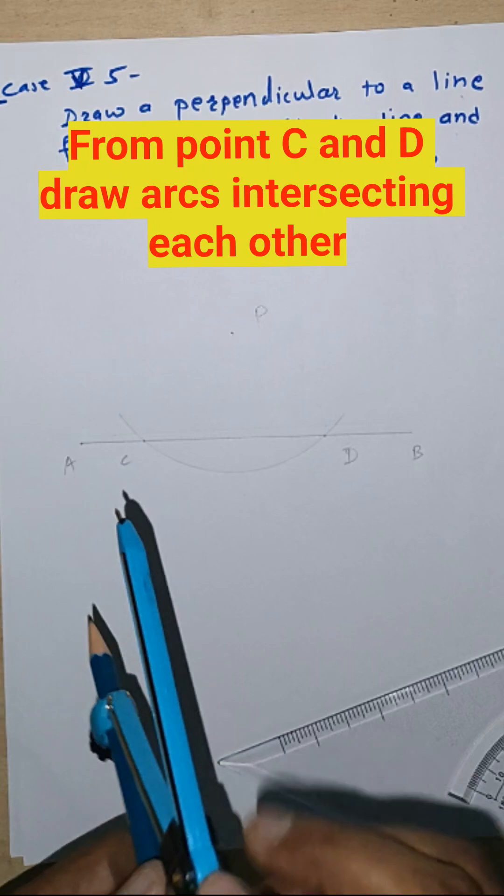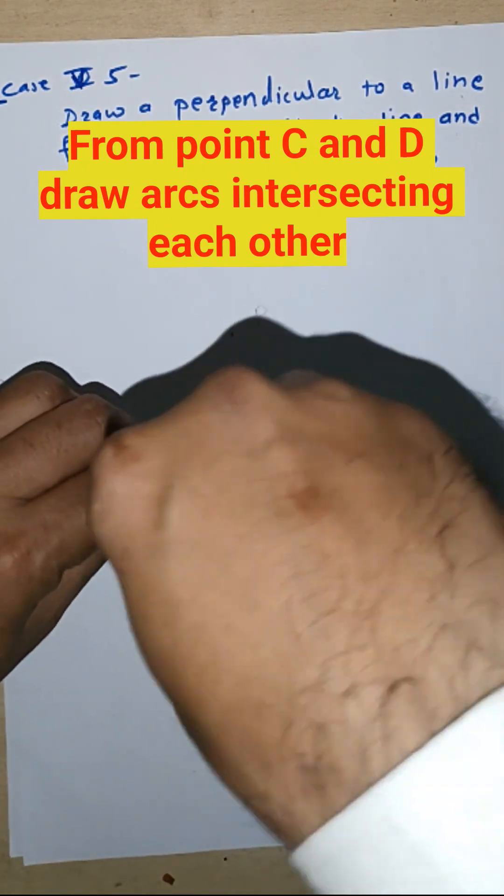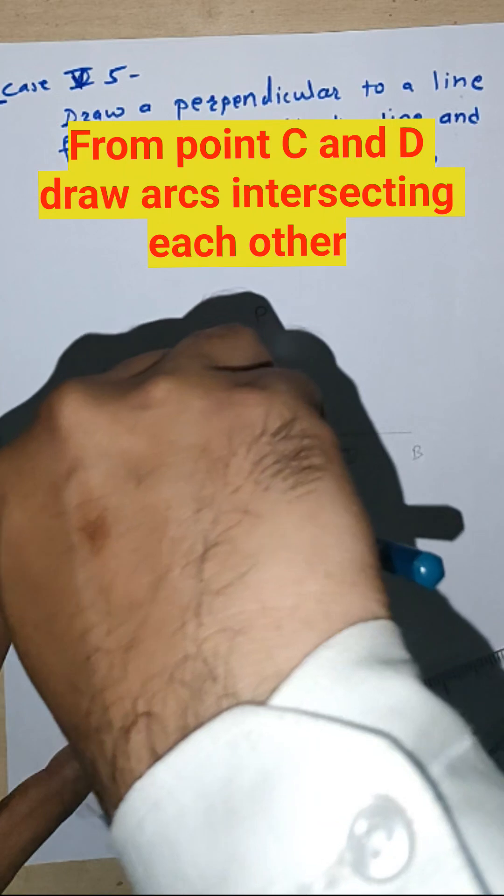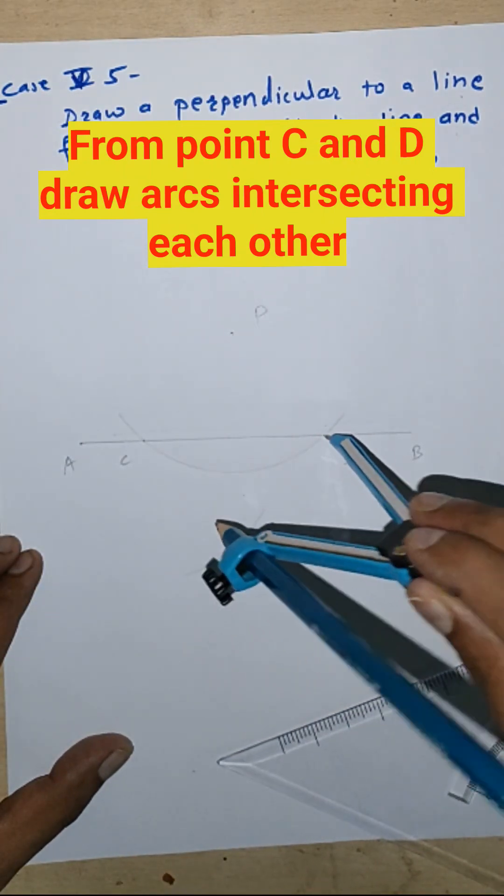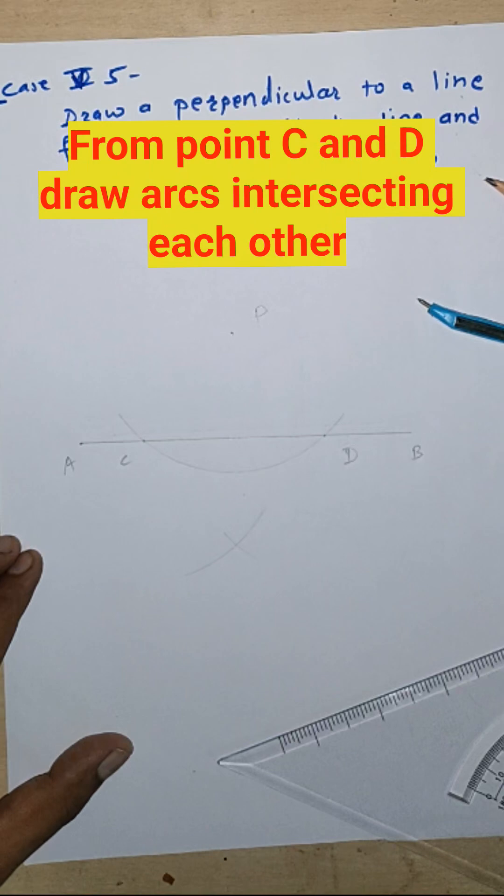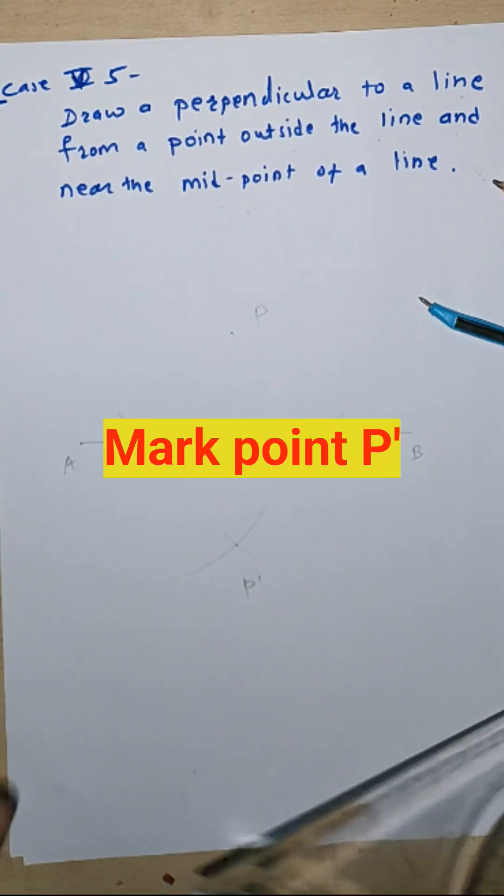From C and D, draw the intersecting arcs to each other. This will be our one arc and this will be our another arc. It will intersect at point P'. Join P and P'.